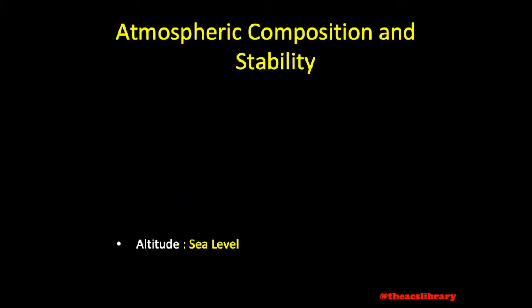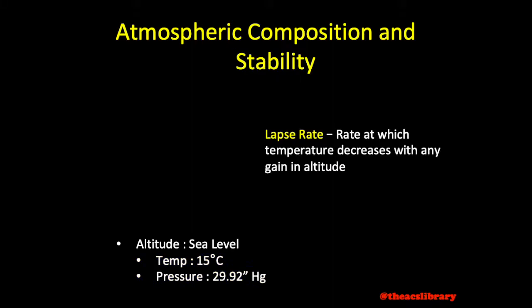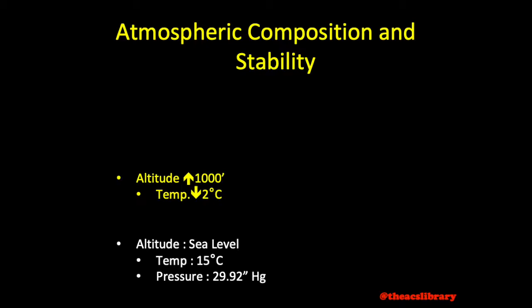At sea level, the standard atmosphere is a temperature of 15 degrees Celsius and a pressure of 29.92 inches of mercury. The lapse rate, or rate at which temperature decreases with any gain in altitude, is 2 degrees Celsius per 1,000 feet. Similarly, pressure decreases at 1 inch of mercury per 1,000 feet.